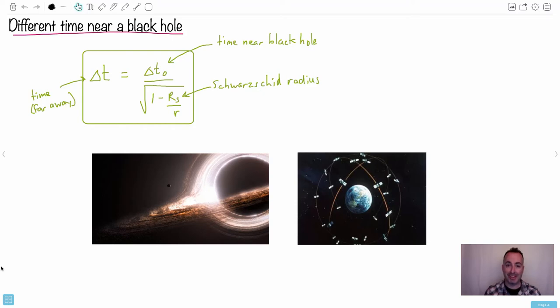Now comes what I think is really awesome. We're going to talk about the time difference as you come closer or farther away from a black hole. So we can use this equation right here. We can say that delta T equals delta T0 over square root of 1 minus Rs over R.